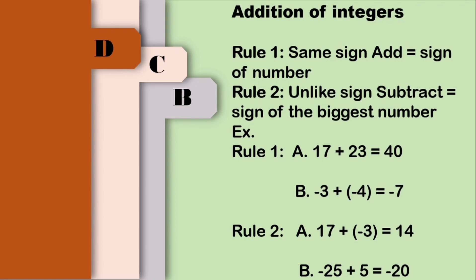Next, for rule number two: 17 plus negative 3. Since the two integers have different signs, we need to subtract the two numbers, then copy the sign of the biggest number. The biggest number is 17, at ang sign niya ay positive. Kaya yun yung susundin natin. Ang answer natin dito ay positive 14.